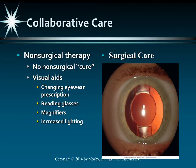Treatment for cataracts includes non-surgical versus surgical care. Non-surgical therapy is usually what we begin with. You can have cataracts in one or both eyes, with one worse than the other, and surgery may not be necessary right away. You may just need updated eyeglasses, reading glasses, a magnifier, and increased lighting. Patients who experience glare at night may need to elect to drive only during daytime hours.